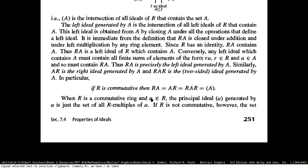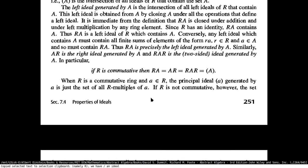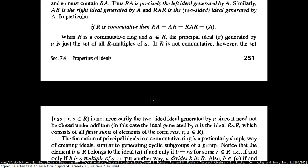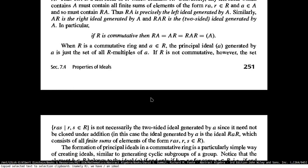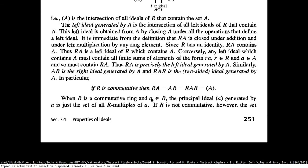If your ring is commutative and you have an element from the ring, then the principal ideal generated by this element is going to be the set of all R multiples of A — it's going to contain the set of all elements of the form A times something from R.